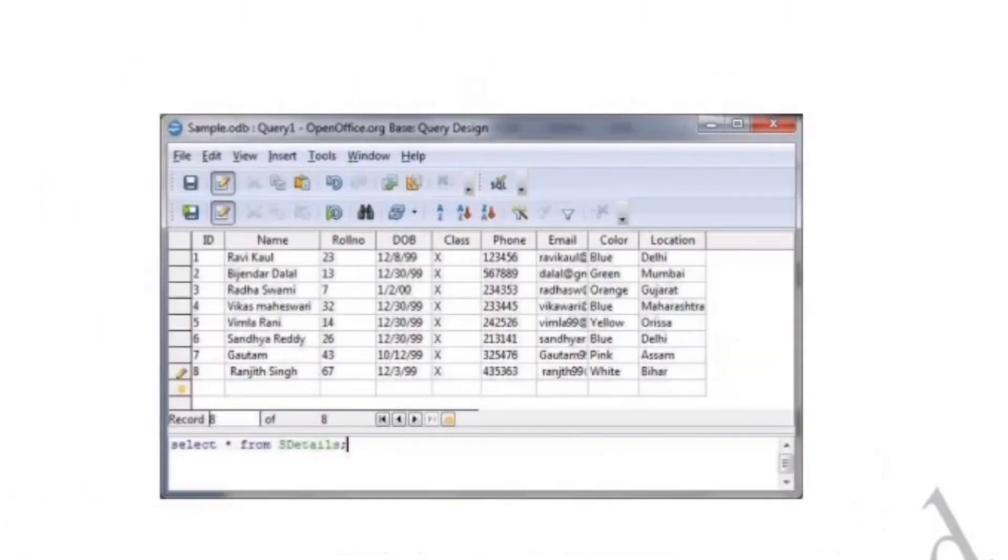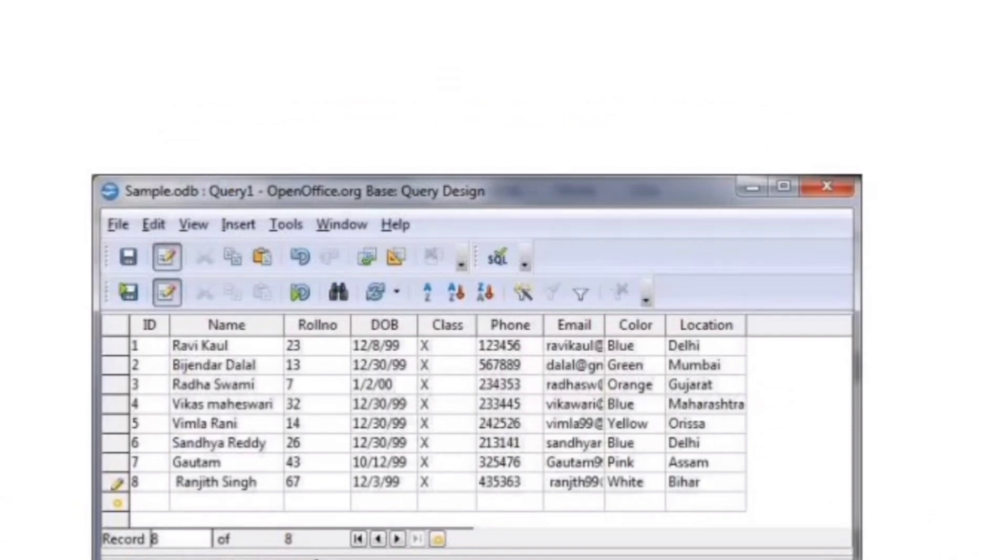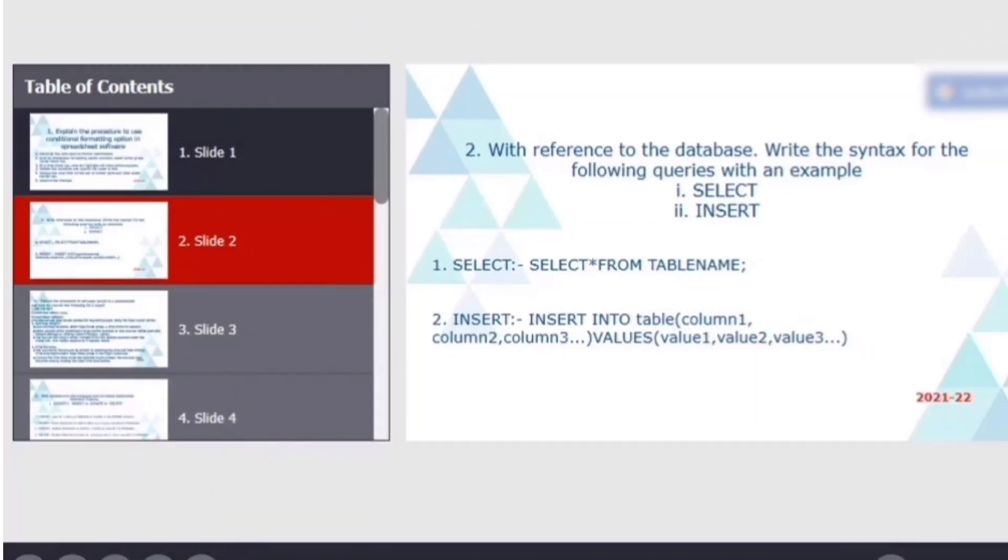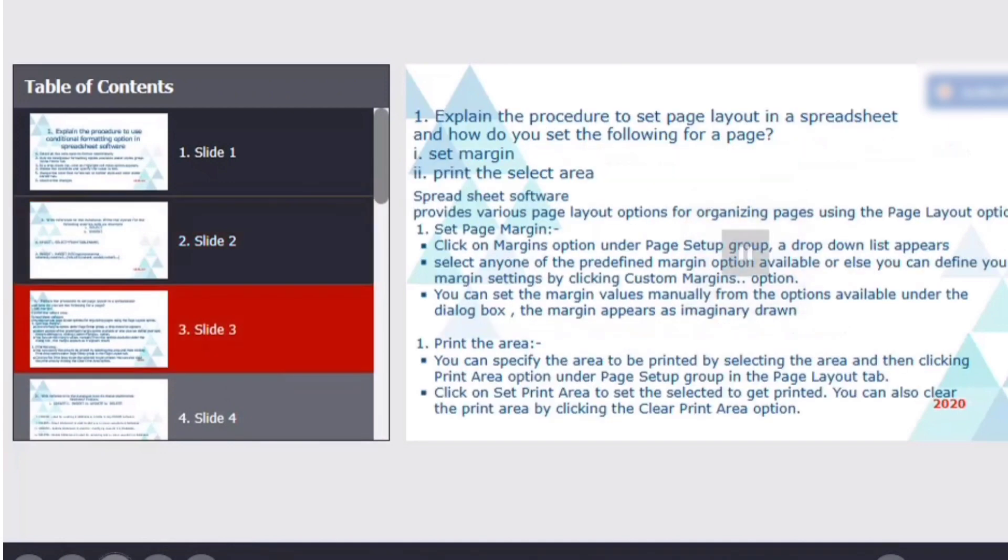This creates a table including these columns. After this, in the next step, write down a database table like this with ID, name, role number, date of birth, class, phone number, email, color, location, which includes all these details. Now let us move on to the next question asked in 2020.